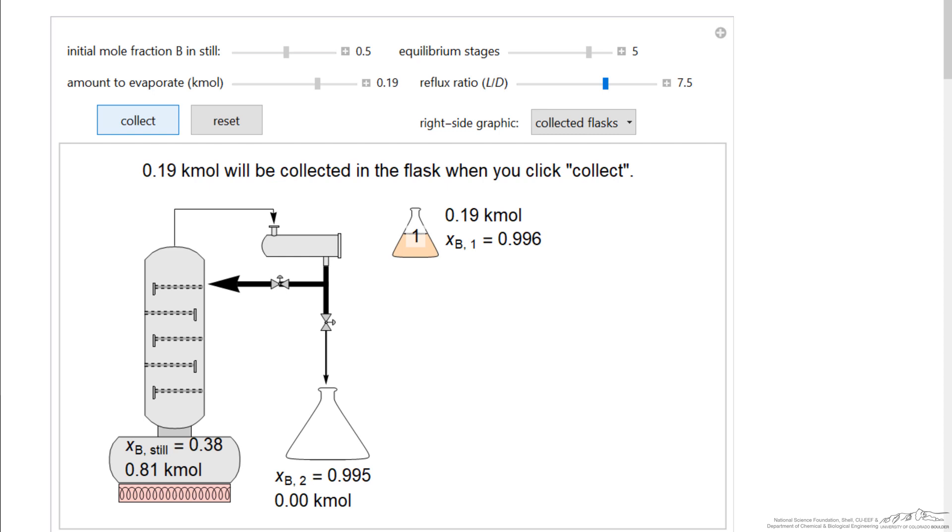So batch distillation has the potential to give us very high separations if we have stages and reflux.